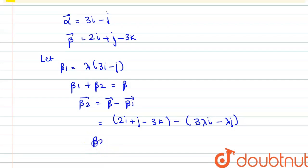So we have beta 2 here as 2 minus 3 lambda i plus 1 minus lambda j minus 3k.